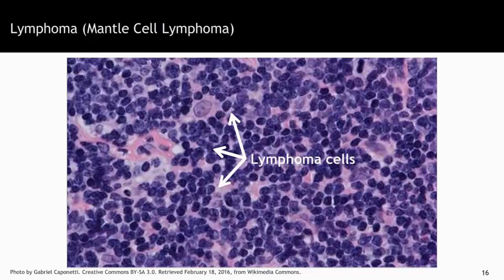This is an example of a mantle cell lymphoma. All you see in this picture is an overgrowth of cells that are out of shape — different shapes and different sizes. The normal lymph node is totally effaced in this picture; it is nothing but cancer cells. Because they start in the lymph node, they are called lymphoma.